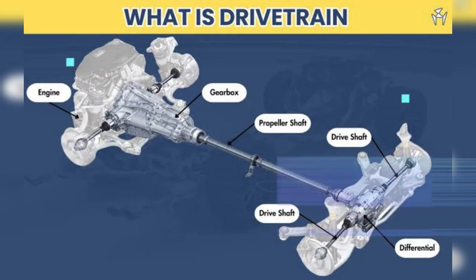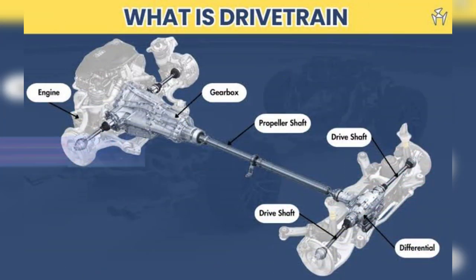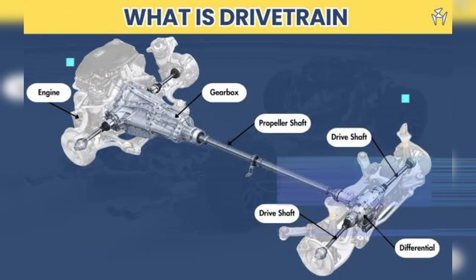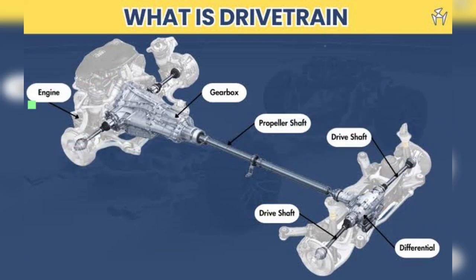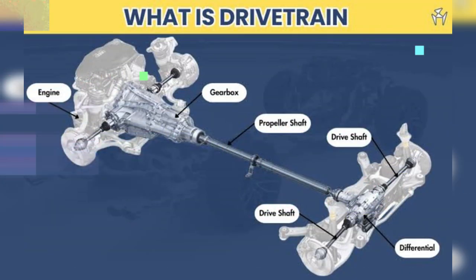The drivetrain is the unsung hero of your car, transferring engine power to the wheels and propelling you forward. Here's a breakdown of its key components. The engine is the heart of the car, where combustion creates the power that gets transferred to the drivetrain.